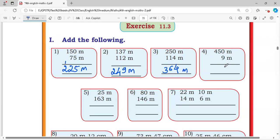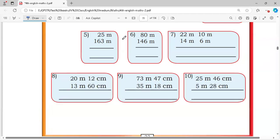Fourth: 0 plus 9 is 9, 5 plus 0 is 4, equals 449 meter. Fifth: 5 plus 3 is 8, 2 plus 6 is 8, 1, equals 188 meter. Sixth: 0 plus 6 is 6, 8 plus 4 is 12, carry 1. 1 plus 1 is 2, equals 226 meter.